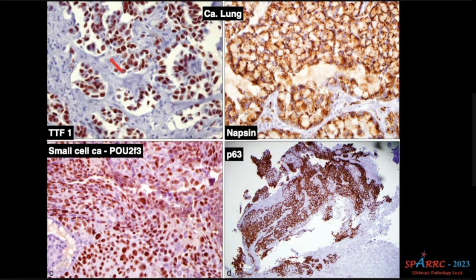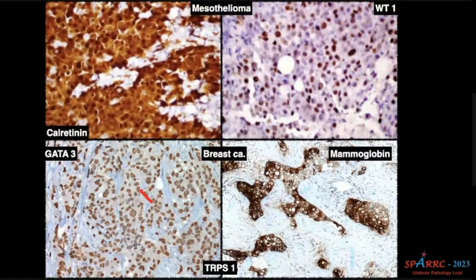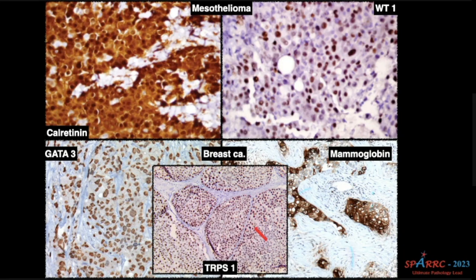TTF-1 for adenocarcinoma — it is a nuclear marker. Napsin is a cytoplasmic marker. P63 or P40 for squamous cell carcinoma. And POU2F3 for small cell carcinoma. For mesothelioma: calretinin and WT-1, but remember BAP-1 loss for malignant mesothelial cells. For breast: GATA-3, a nice nuclear marker; mammoglobin, a cytoplasmic marker. But remember the new marker TRPS-1, which is a nuclear marker.